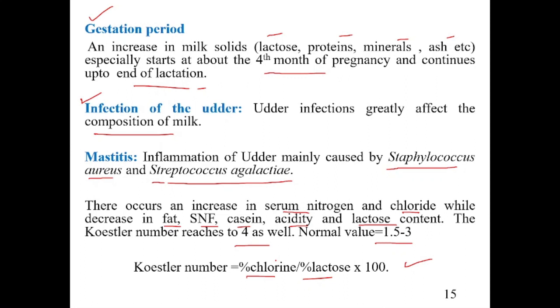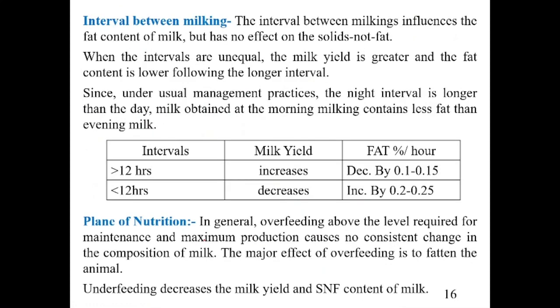The Chlorine Number — defined as (% chlorine / % lactose) × 100 — reaches a value of 4 in cases of mastitis, whereas the normal value ranges from 1.5 to 3.